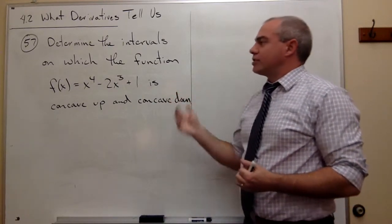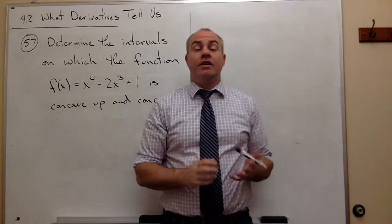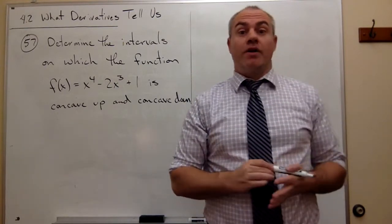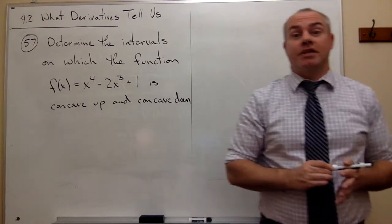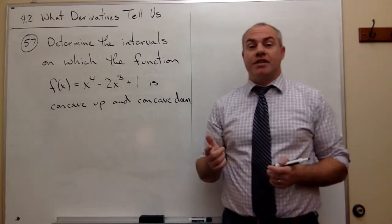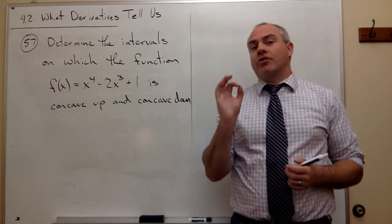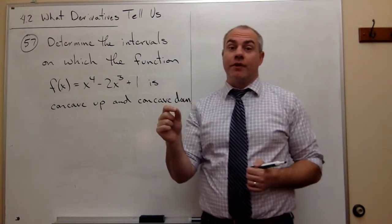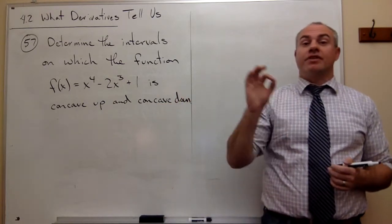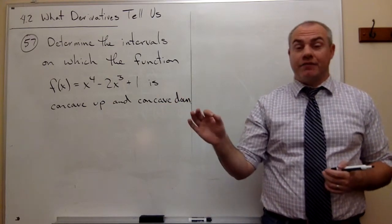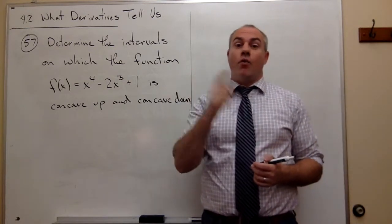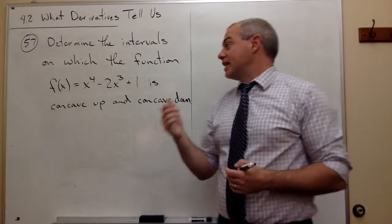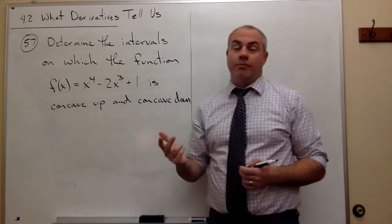Determining where a function is concave up and concave down is very similar to figuring out where it's increasing and decreasing. The only difference is we don't find critical values for the first derivative anymore — we find critical values for the second derivative. So instead of taking one derivative and finding critical points, we take two derivatives.